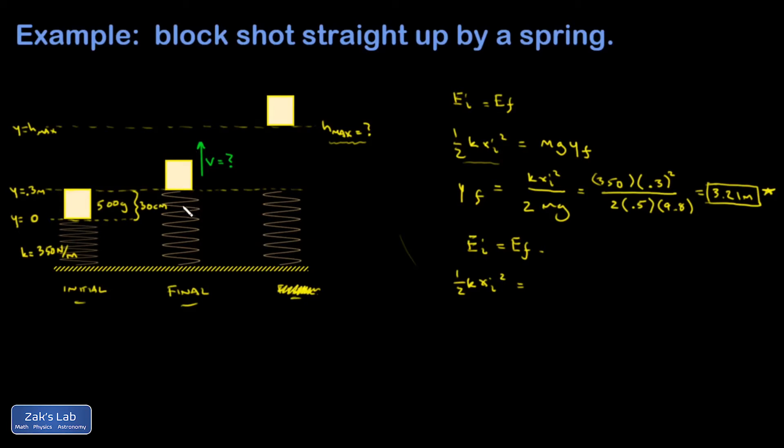But then in my final state, I have some gravitational potential energy, so that's going to be an mgy final. And I have kinetic energy. I'll just use a v for that. You could use a v final if you like. So I'm trying to solve for v final here.